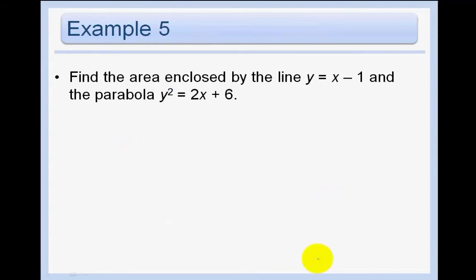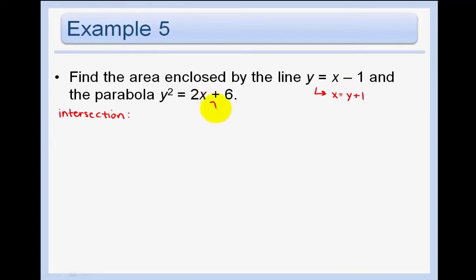For example, find the area enclosed by the line y equals x minus 1 and the parabola y squared equals 2x plus 6. It's easier to solve for x instead of y, because solving for y would require a plus-or-minus square root making the antiderivative difficult. Solving for x: x equals y plus 1, and from the parabola x equals one-half y squared minus 3. Setting equal to find intersections, we multiply through by 2 and get y squared minus 2y minus 8 equals 0, giving intersection points at y equals negative 2 and y equals 4.